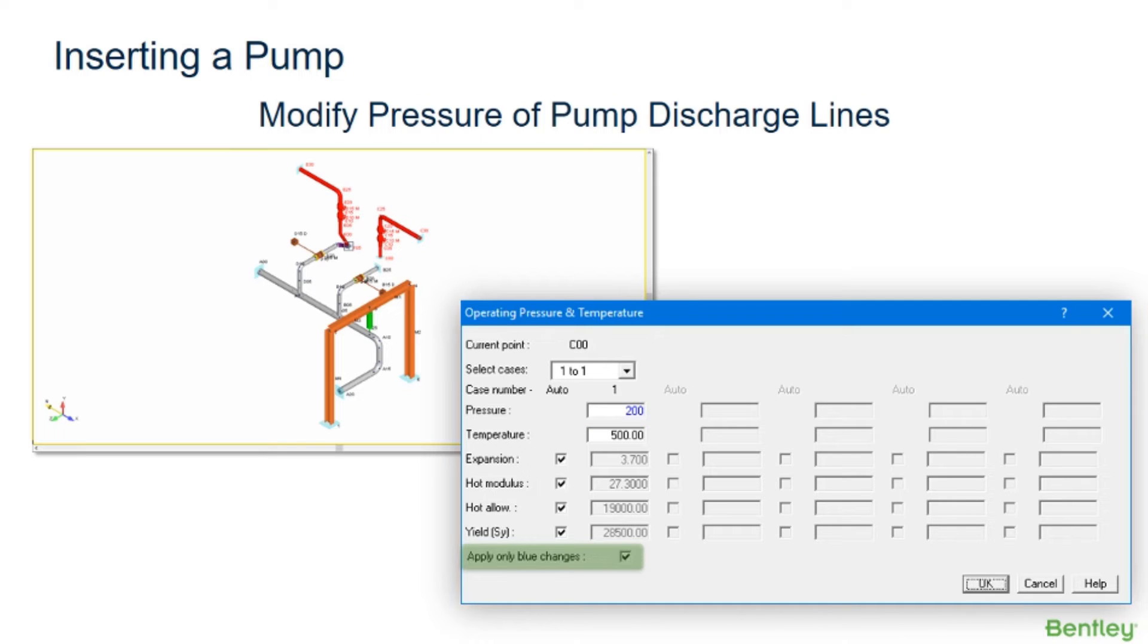The apply only blue changes field becomes accessible in this dialog and is by default enabled. When enabled, only those fields which are changed by the user and colored blue are applied to the currently selected range. For example, a range of points with varying temperatures can be assigned the same pressure. Similarly, changes can be limited to only one operating case.